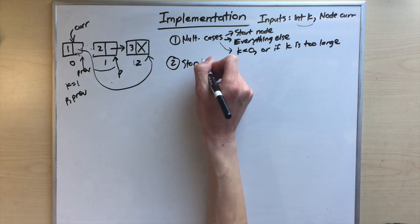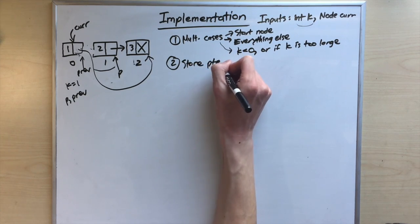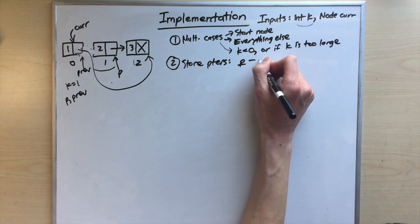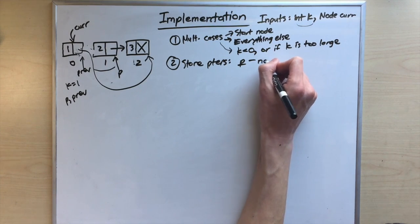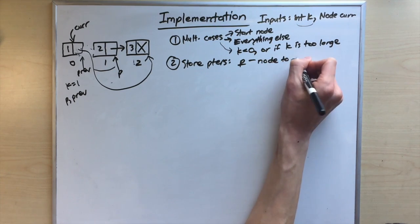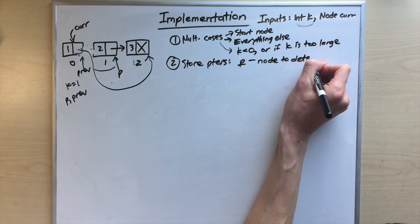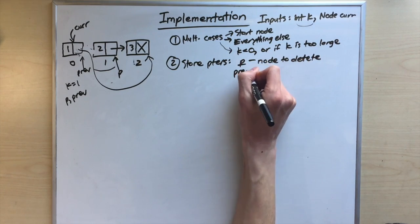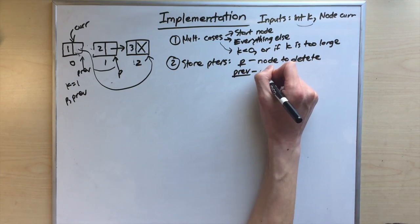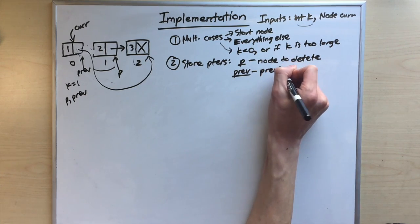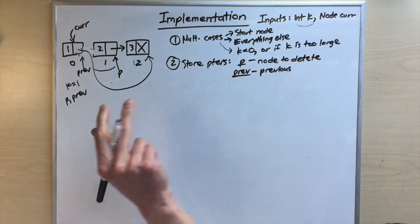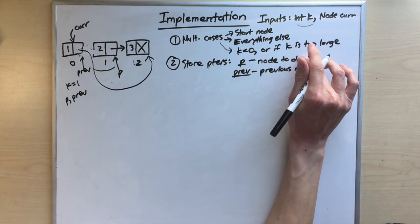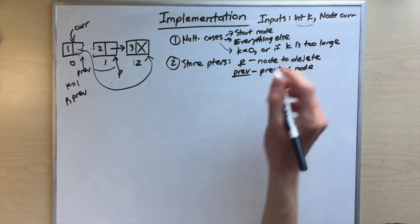To summarize: pointer p tracks the node to delete, and pointer prev is the previous node, always traveling one step behind p.